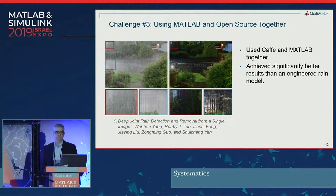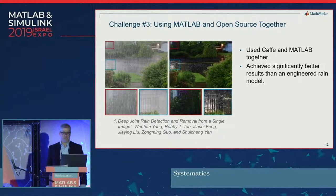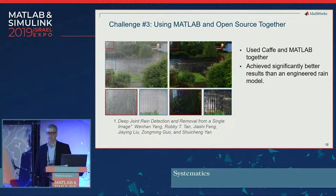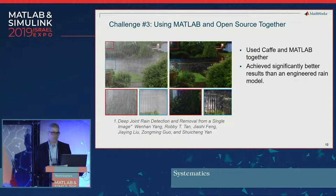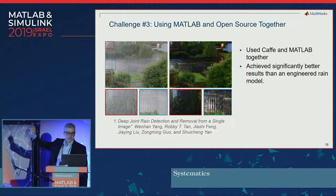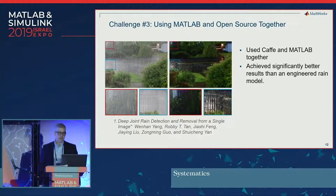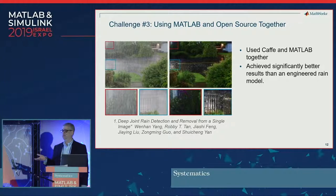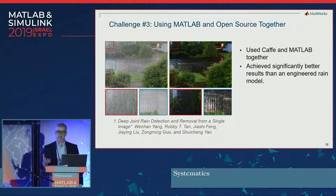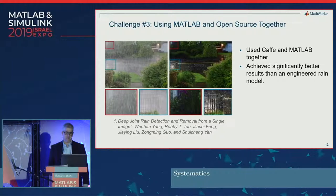The third challenge is using MATLAB and open source together. Here's an example of a research paper recently published that used Caffe and MATLAB together, and achieved significantly better results than an engineered model. In this case, they have an original image of heavy rainfall and are trying to see through the rain to detect details. If you're in a car driving in heavy rain, you want the car to see all the objects on the road — this is a critically important application.